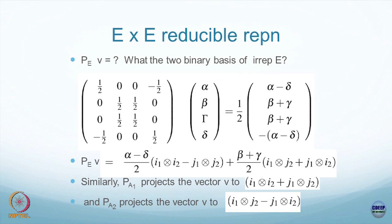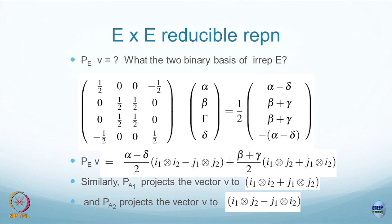The corresponding irreducible representation will have a four-dimensional basis state. Any arbitrary vector v, if I write it as a column as alpha, beta, gamma, delta, it should be understood as alpha times i1×i2, beta times i1×j2, gamma times j1×i2, and delta times j1×j2.